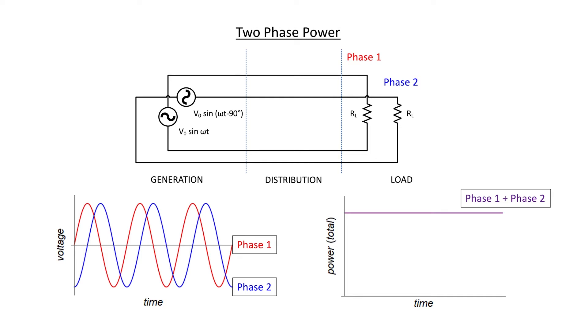It turns out that one of the advantages of a two-phase system over a single-phase system is that not as much copper is required in the distribution system. In order to analyze that, we're going to look at these four wires in more detail and think about how much current they need to carry. We have two hot wires for each of the two phases, and we have two neutral or return wires for each of the two phases as well. The hot wires carry current to the load, and the neutral wires carry current back from the load to the source.